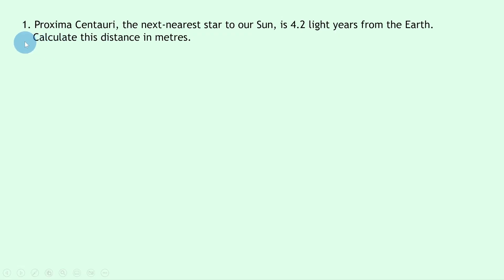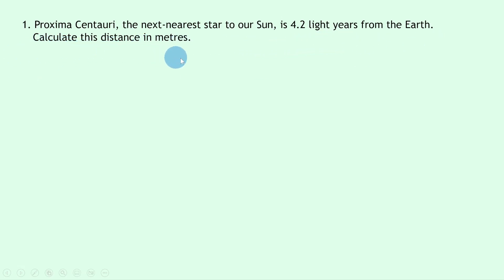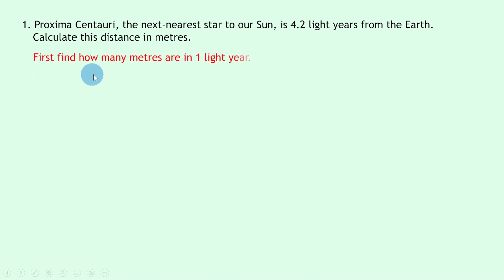Let's get started. Question one says: Proxima Centauri, the next nearest star to our sun, is 4.2 light years from the earth. Calculate this distance in meters. First you want to find how many meters are in one light year, and to do this we use speed-distance-time, where the speed is the speed of light.